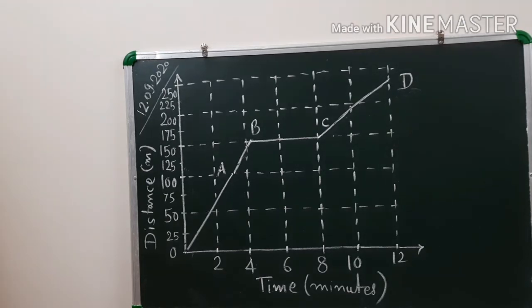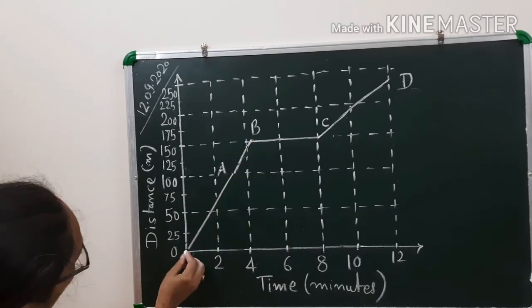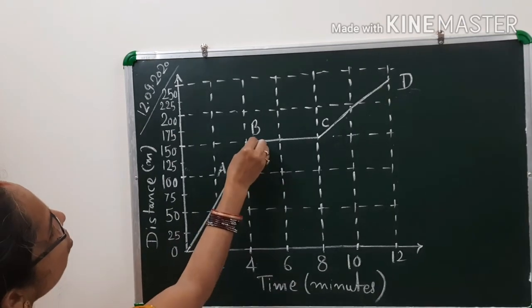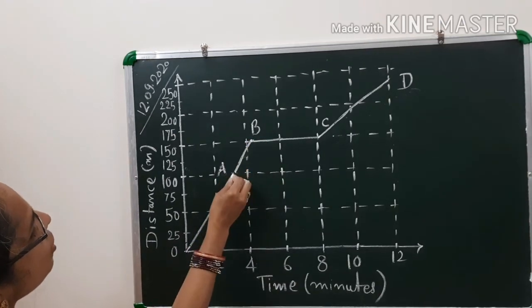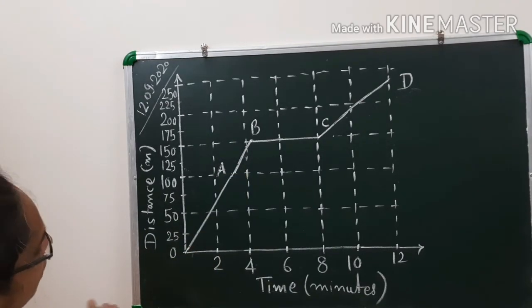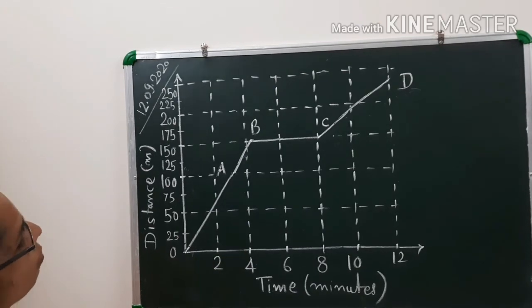The second question: is the motion between 0 to 4 minutes uniform? For uniform motion, the graph must be a straight line. But here it is not a single straight line — there is one line from O to A and another from A to B, giving a slight tilt. So it is not a straight line, and we can say that between 0 and 4 minutes the object is not in uniform motion.